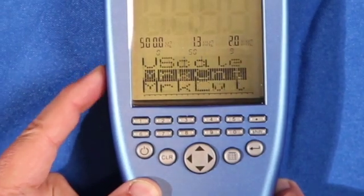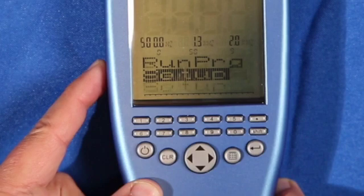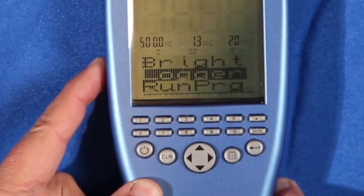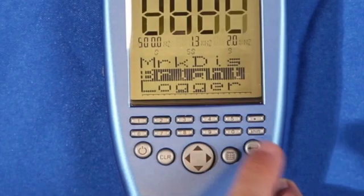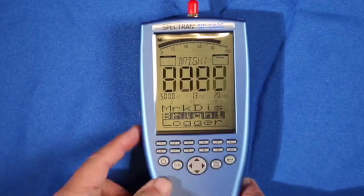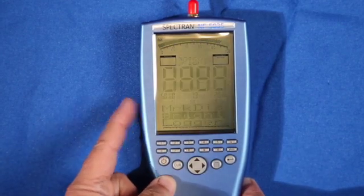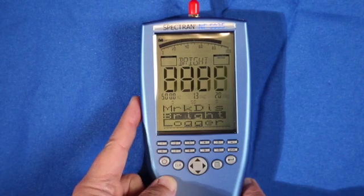look for the function labeled 'Bright,' select it from the menu using the enter button. The brightness can be changed using the up and down arrow buttons or the wheel on the left side of the unit. Press enter to select your preference.